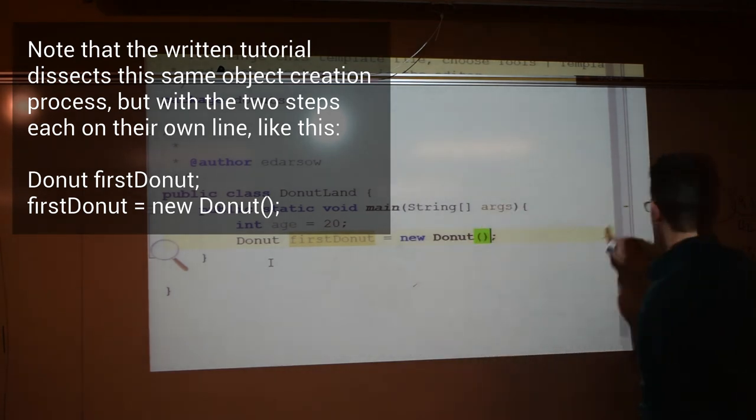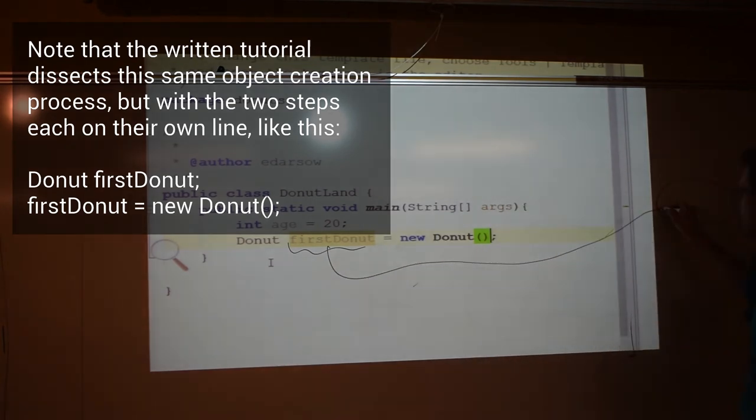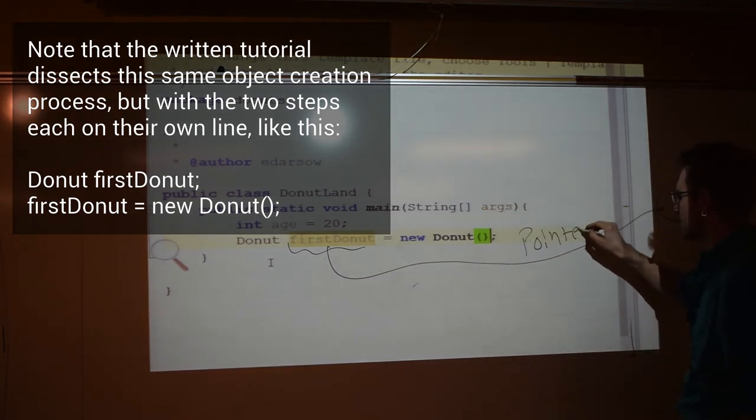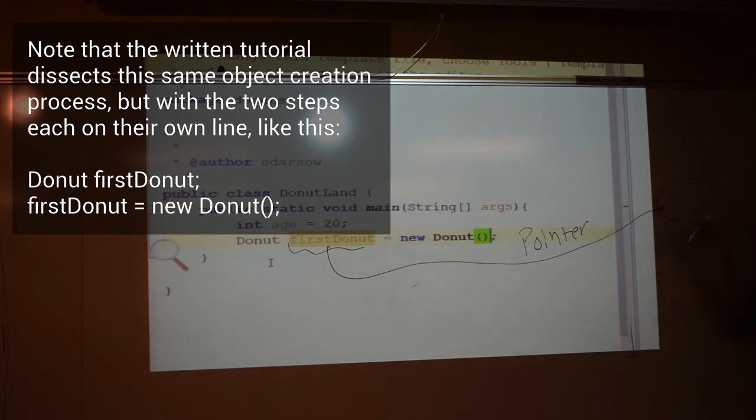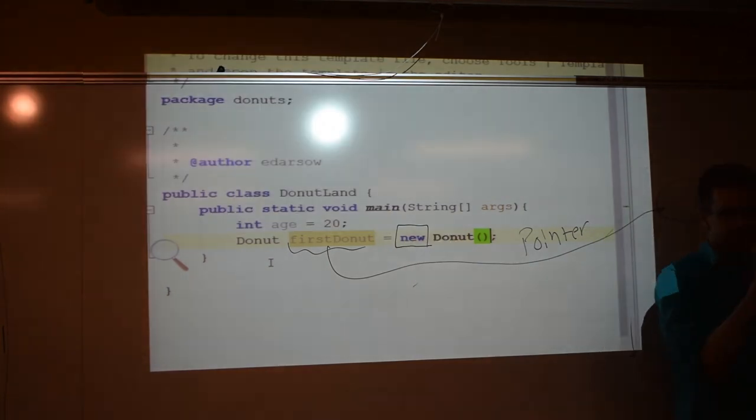So what we can think about is this. Here's our heap. So first donut is a pointer to wherever the object is that I just made with the keyword new. How many donuts do I get with one keyword new? One. One. I have made one new donut. New will always give you one new object.